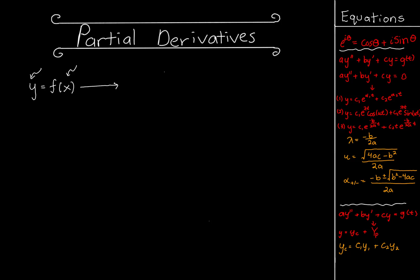We usually map out functions of the form y equals f of x on a plane defined in R2. We have the x-axis and the y-axis, and we draw functions like this. Each corresponding y value comes from a corresponding x value, so y completely depends on x. The key idea is that when we plug in some number we choose into this machine, we get some number out.